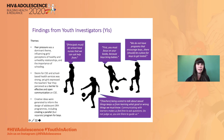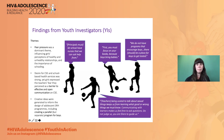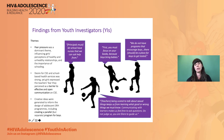Some of the important themes from their findings were that peer pressure was a dominant theme, influencing girls' perceptions of healthy and unhealthy relationships and the importance of schooling. For example, one of them said, 'First, you must focus on your books because boys bring babies.' There was also a strong desire for comprehensive sexuality education and school-based health services, so the program was very acceptable. However, they saw teachers' fears of having direct conversations about sexuality as a barrier to effective and open communication. Finally, they shared lots of creative ideas to inform the design of future programs.